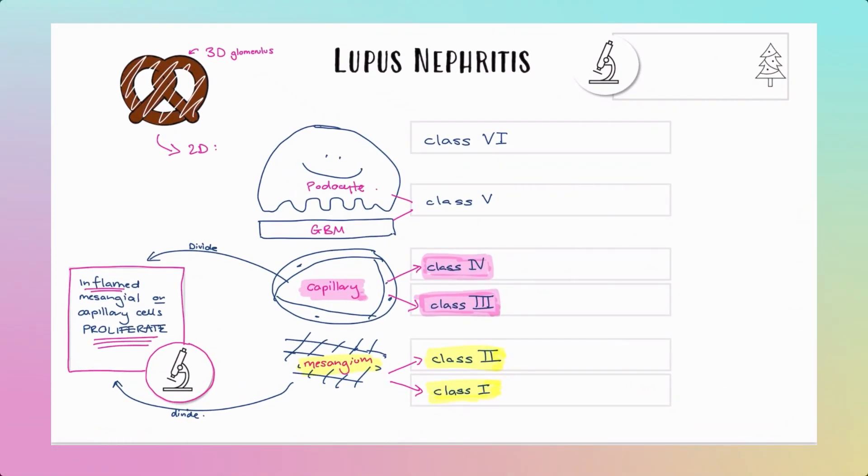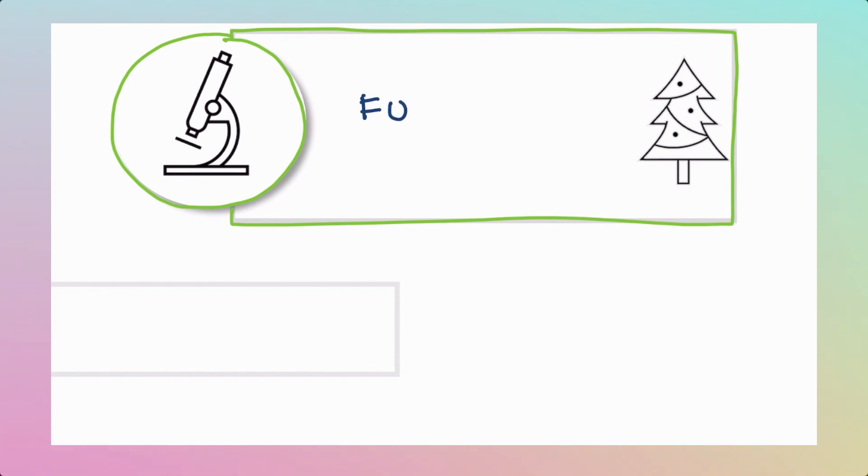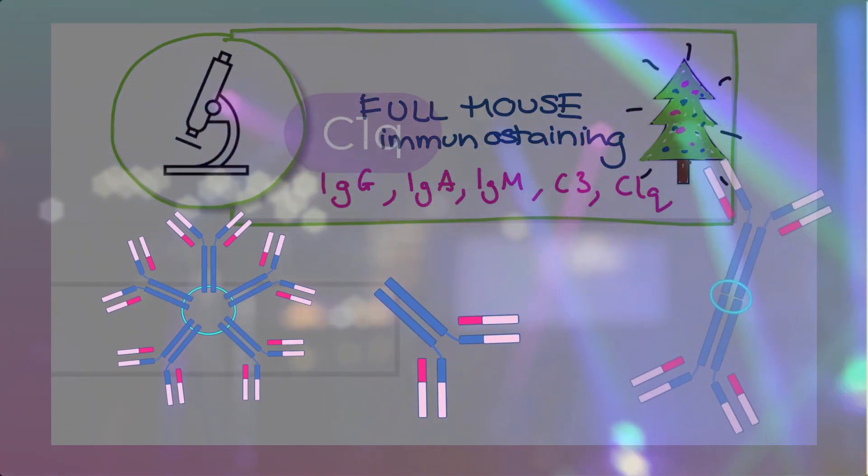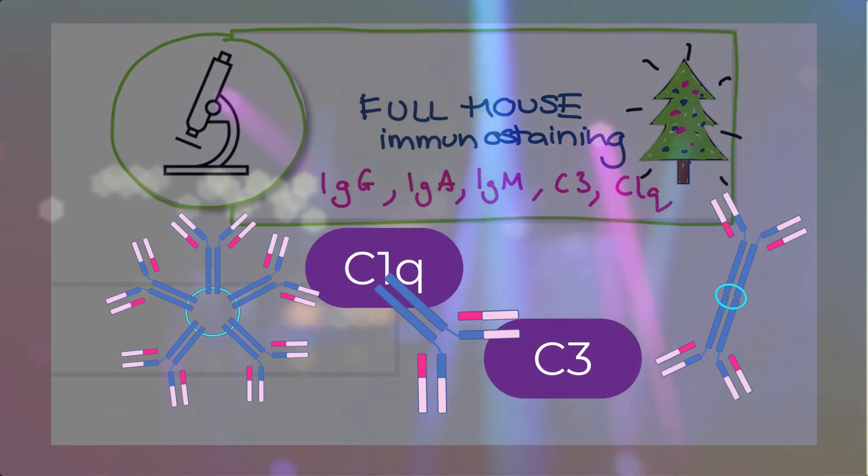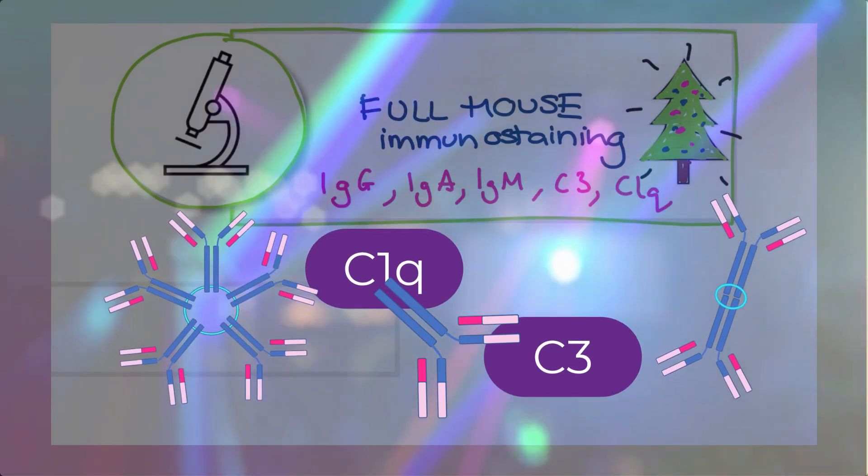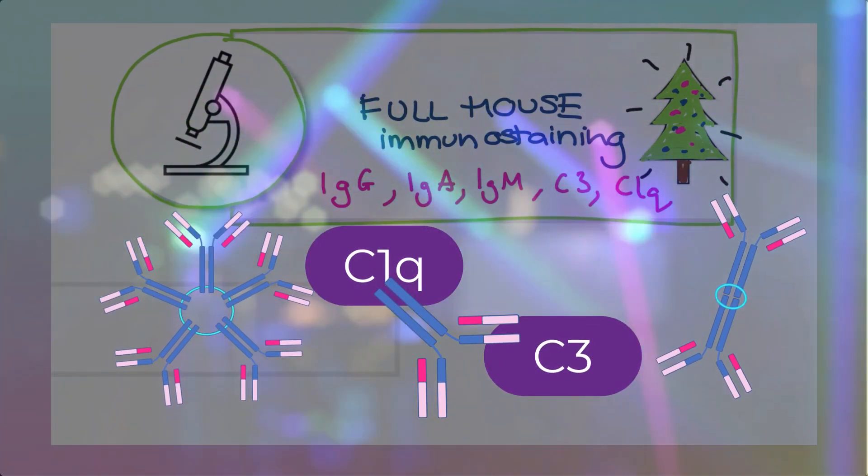The other thing to say about lupus is that when we stain the biopsy for antibodies and complement, we tend to get what's known as a full house stain, meaning it lights up like a Christmas tree. There are all sorts of antibodies and complement factors, all the things. It's a real variety pack. It's like the whole immune system got together in there for some kind of gathering. There's a massive immune party, there's full house staining, it's all happening.